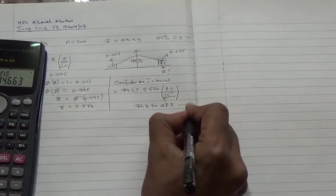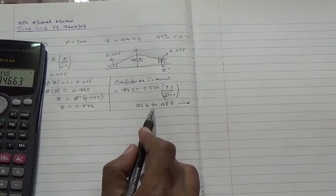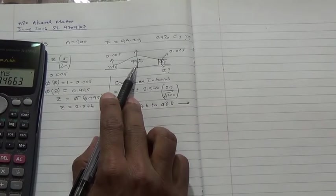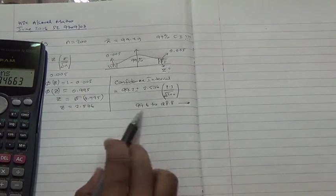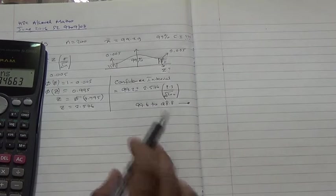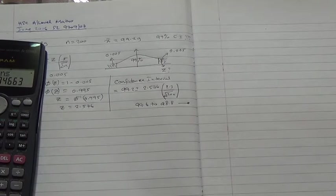So, this should be your answer. What it means, basically, is that I'm 99% confident that the mean value here lies between these two critical values. And here we are for this question. I hope you've enjoyed this video.